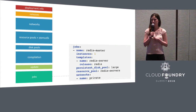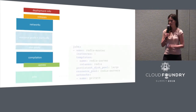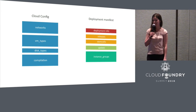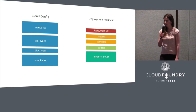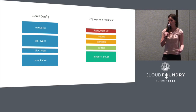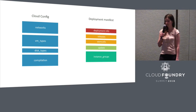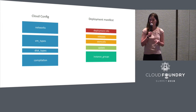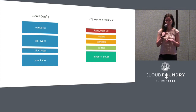The update section defines how to perform a rolling update of your deployment, and jobs define what to install and how your deployment should look. Cloud config is your infrastructure-specific properties now in one place, defining types of resources that your deployments can use — like networks, types of VMs, disk types, and compilation. That leaves your deployment manifest focused on your deployment layout, and potentially makes it easier to migrate your deployment manifest to different infrastructures. Also notice that resource pools were renamed to VM types, disk pools were renamed to disk types, and stem cells were split out to the deploy manifest because different deployments can use different stem cells.